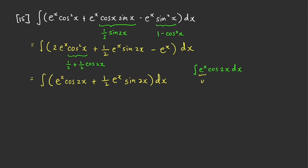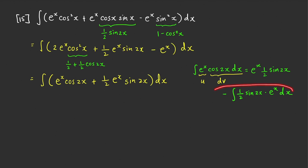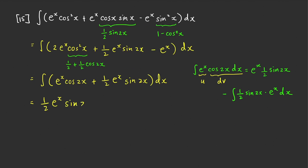By integration by parts, this equals uv minus the integral of v·du: that is e^x·(½ sin(2x)) minus the integral of ½·sin(2x)·e^x dx. This resulting integral is just the opposite of the original integral of e^x·cos(2x) dx. Therefore, our full integral evaluates to ½·e^x·sin(2x) + C.